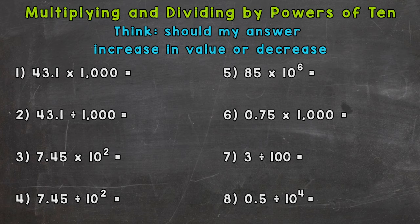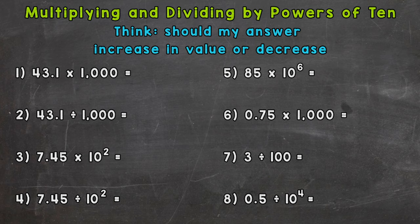And as you can see, there are 8 problems on your screen that we're going to go through together. Now, up top is something very important that we need to think of while we go through these problems: should my answer increase in value or decrease? It's something to think about as we move our decimals within these problems.